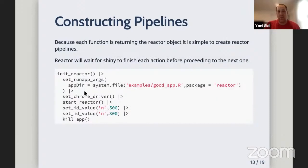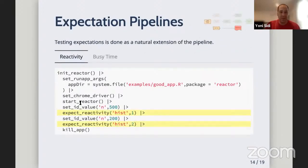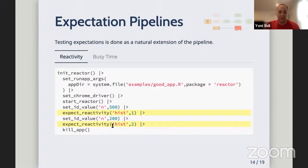Constructing the pipelines: here is an example of a full pipeline. You initialize the reactor, set the application, add the Chrome driver, start the reactor, then manipulate the input N, and close the app. This same pipeline can be used to test expectations on the app while running. After setting the ID value N to a new value, you test the expectation that there was one hit to the reactivity of the output hist. You change the value again and test the reactivity that happened the second time. There is an internal counter checking how often an input is hit or changed.